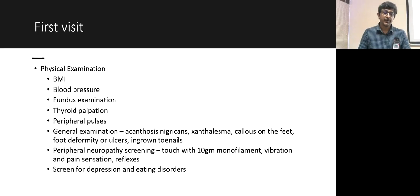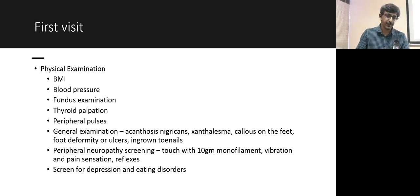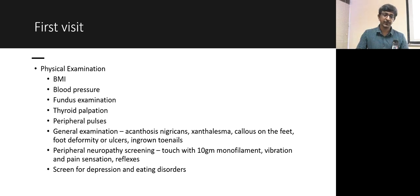On examination, check blood pressure, peripheral pulses, BMI, thyroid, and perform a fundus examination for diabetic retinopathy. On general examination, look for acanthosis nigricans, xanthelasma, foot callosities, ingrown toenails, and ulcers. Do peripheral neuropathy screening with a 10-gram monofilament and assess vibration, pain, and reflexes.